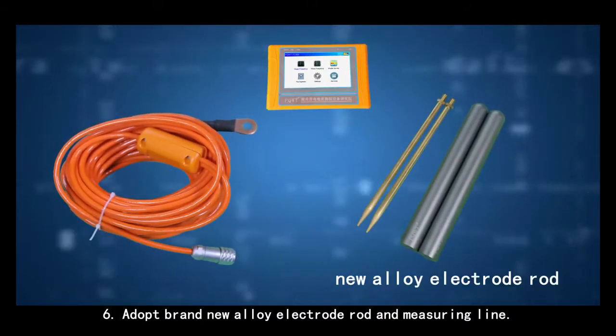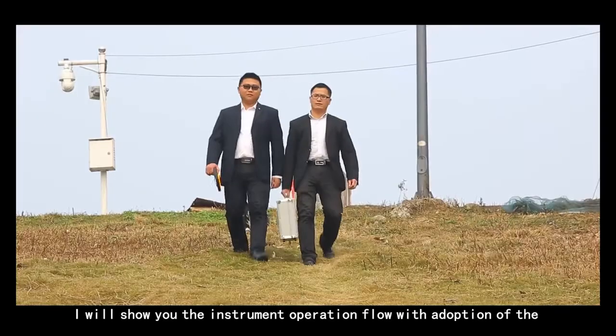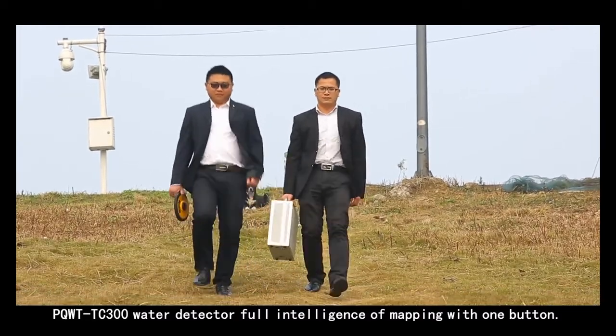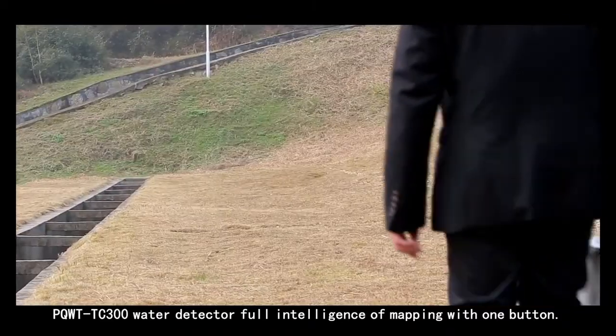Sixth, adopt a brand new alloy electrode rod in the measuring line. I will show you the instrument operation flow with adoption of PQWT-TC300 water detector full intelligence of mapping with one button.